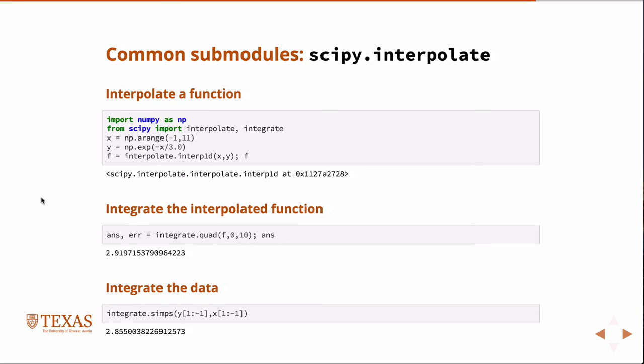Here's an example of using scipy interpolate. In this case, we have basically a set of values, x and y. X goes from minus one to eleven in steps of one, and y is evaluated at those locations - just an exponential function minus those values divided by three. These are numpy operations, we know how those work. We've imported a couple of functions from scipy, mainly interpolate and integrate. From interpolate, we're going to integrate in one dimension this data, x and y. That's going to produce a function.